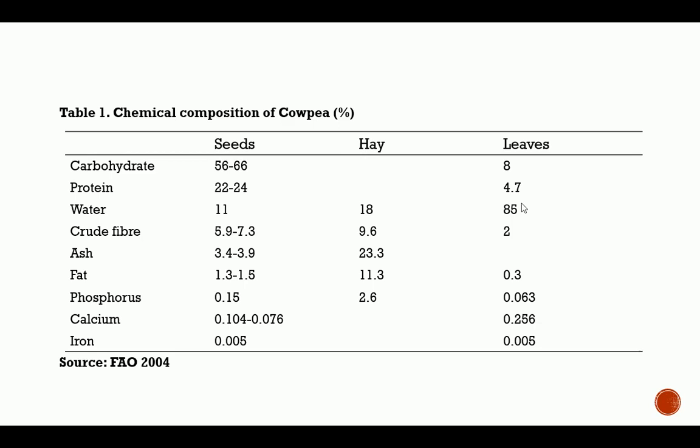The chemical composition of cowpea: Seeds contain about 56 to 66% carbohydrates, while leaves contain about 8%. For protein, seeds have about 22 to 24%, with leaves containing about 4.7%. For water, seeds contain about 11%. The haulm contains about 18% carbohydrates and about 85% in leaves. These are the chemical compositions of cowpea across the various plant divisions.